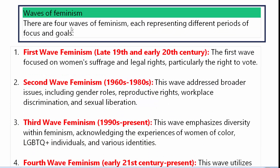There are four waves of feminism, each representing different periods of focus and goals. Feminism के चार waves आये थे और इन चारों waves के अलग-अलग periods, अलग-अलग focus और अलग-अलग goals हैं।